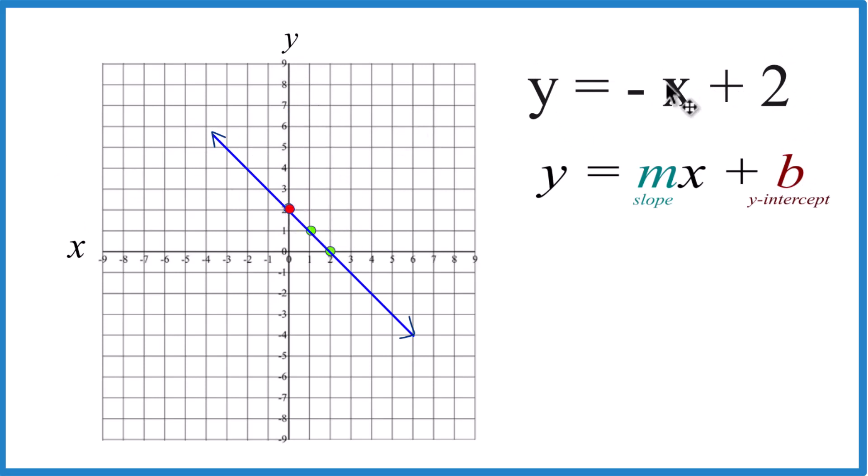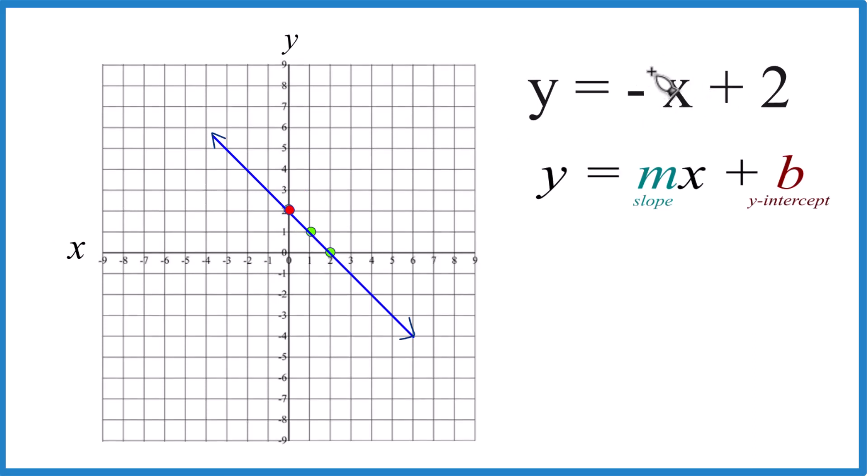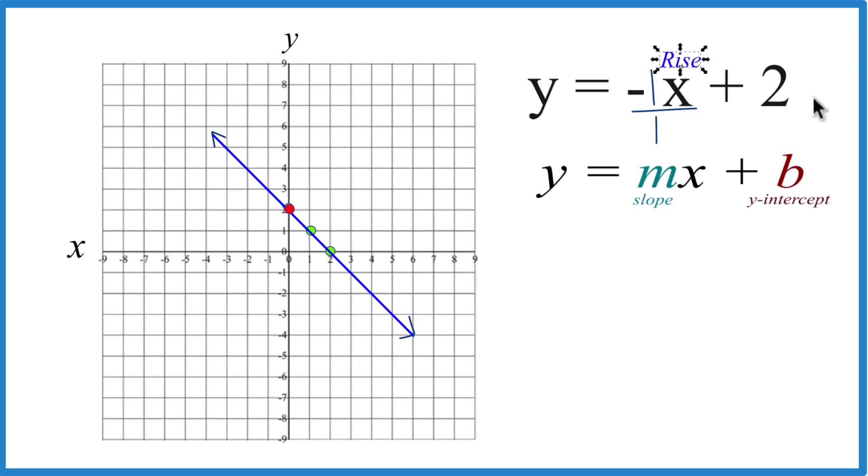Then from there, I can think of negative x as negative 1x, same thing, or even negative 1x over 1, still the same thing. But now I can call this rise over run. So rise is negative 1, run is 1.